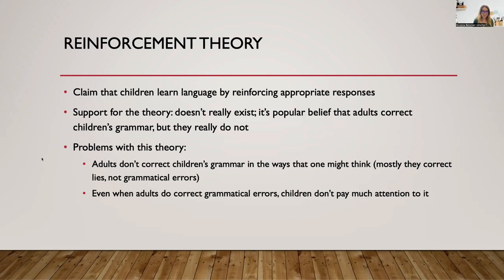Reinforcement theory is another theory, and it has also been refuted. This theory claims that children learn by having positive linguistic behaviors reinforced, and that's how they are able to learn. There isn't really much support for this theory. It's really more a popular belief that adults correct children's grammar — they really don't correct grammar. Even when they do correct kids' speech, mostly they correct lies. If a child tells a lie, adults will call them on that, but they don't correct children's grammar.